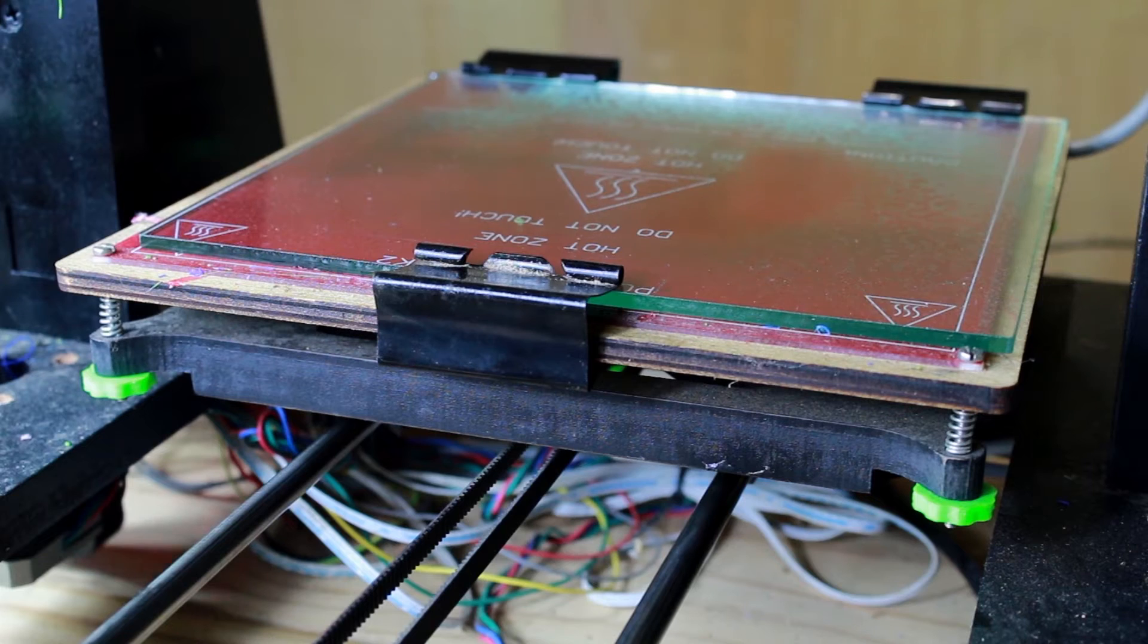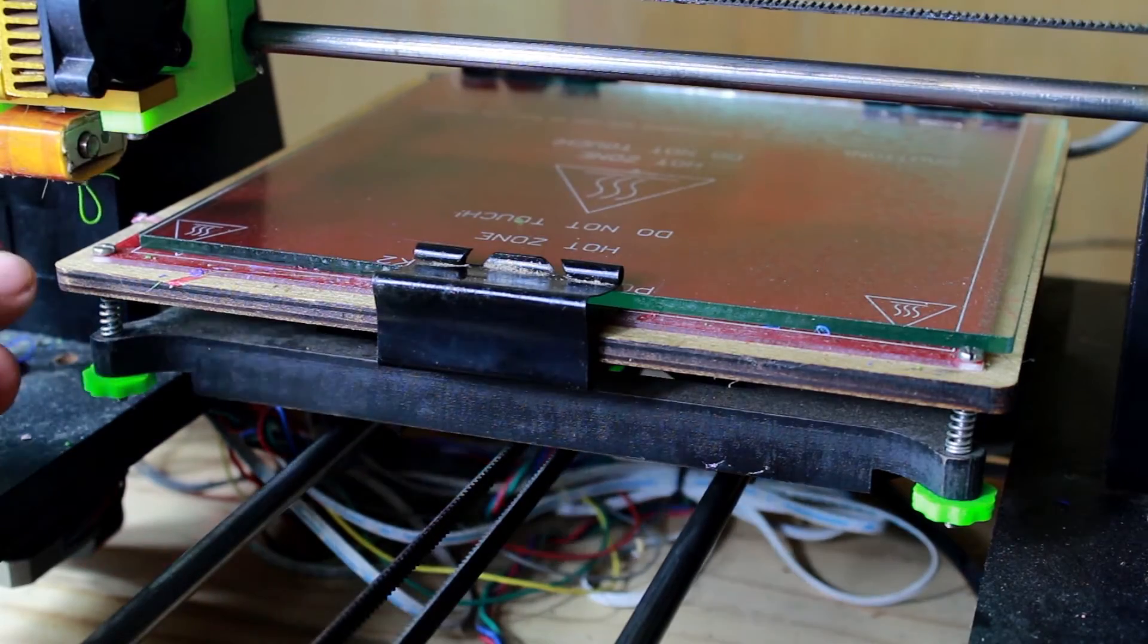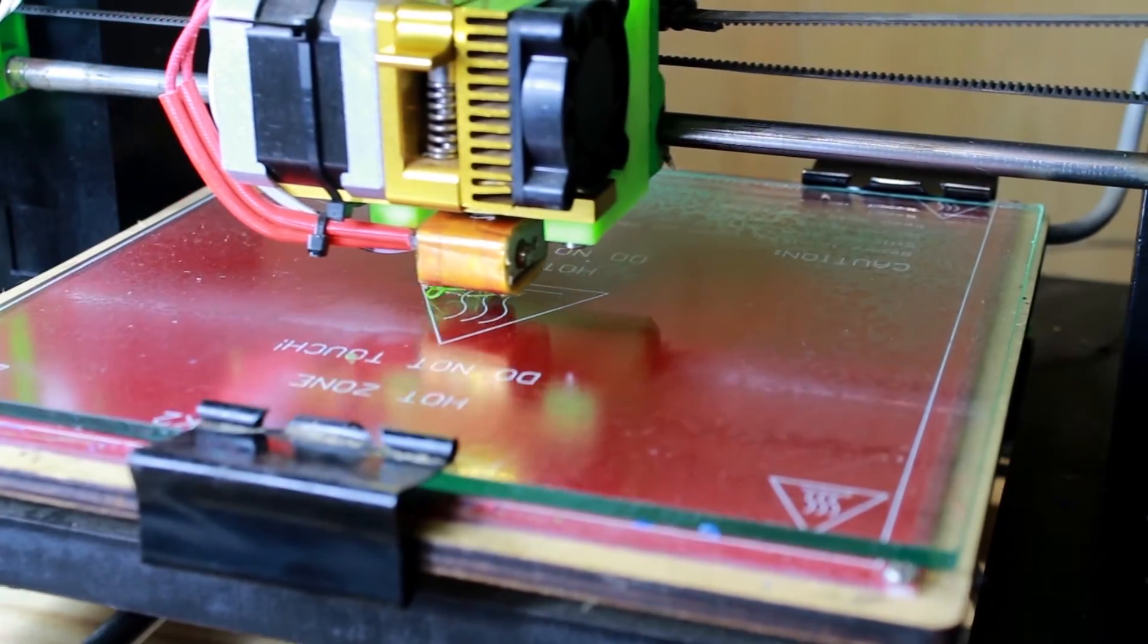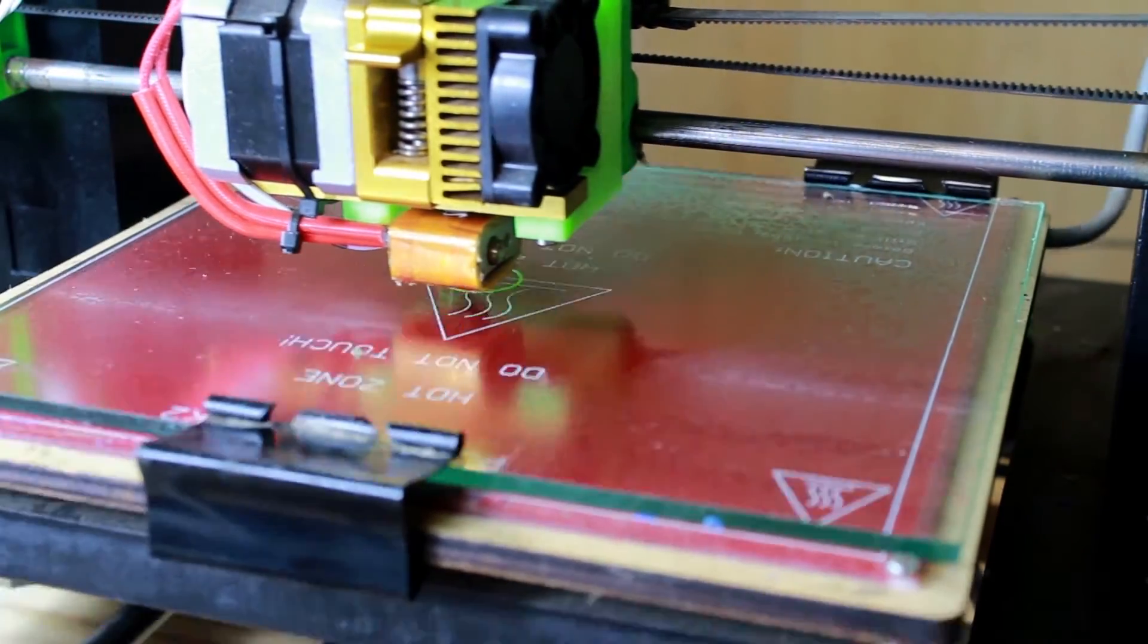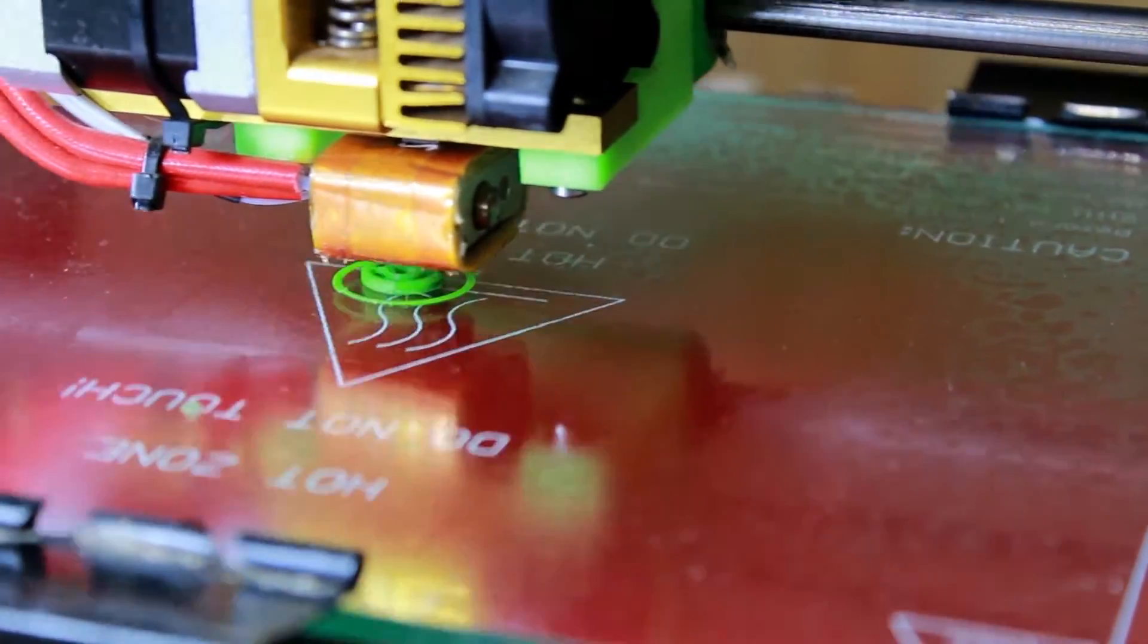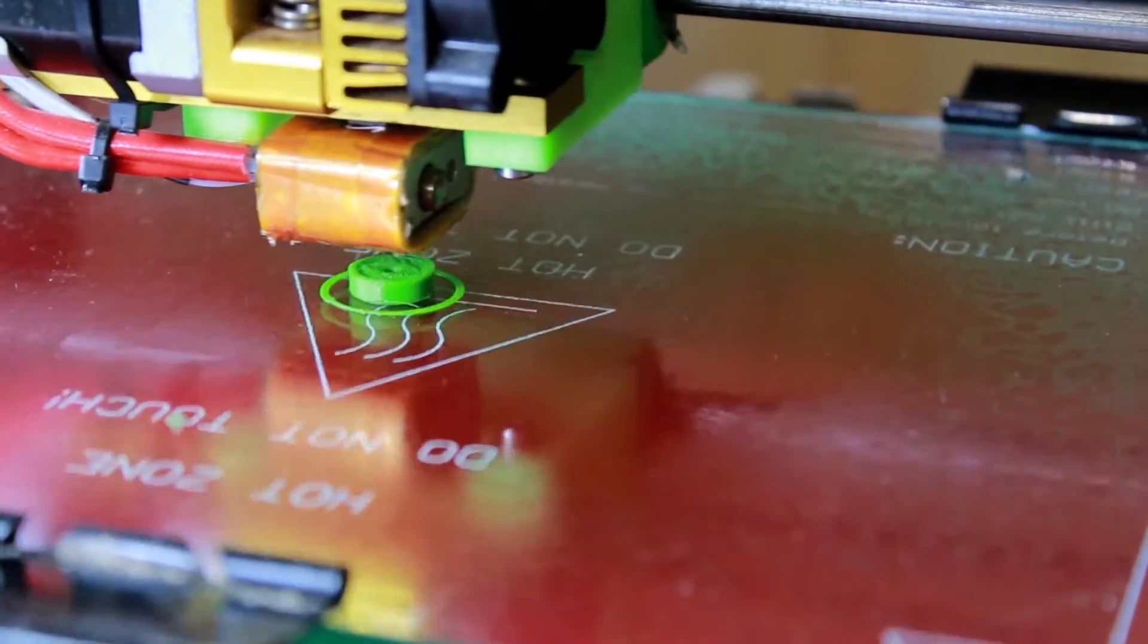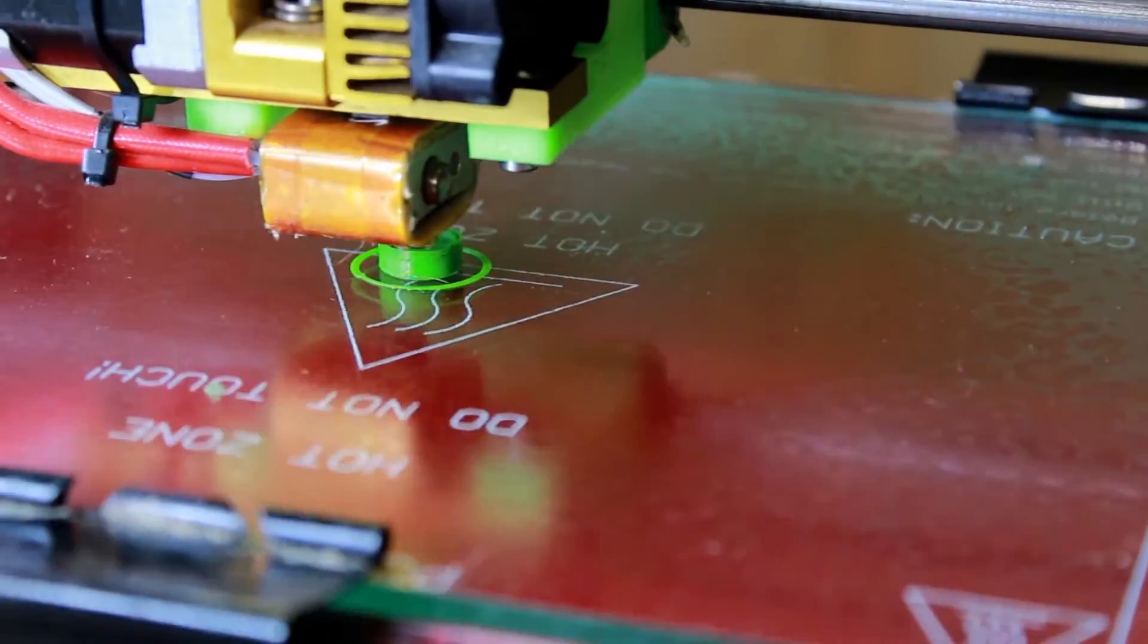I headed over to the 3D printer to print the holder for the BBs. The base is fairly thick so it can push the BBs out of the barrel easier. The wall thickness is much thinner so the holder breaks apart to release the BBs.